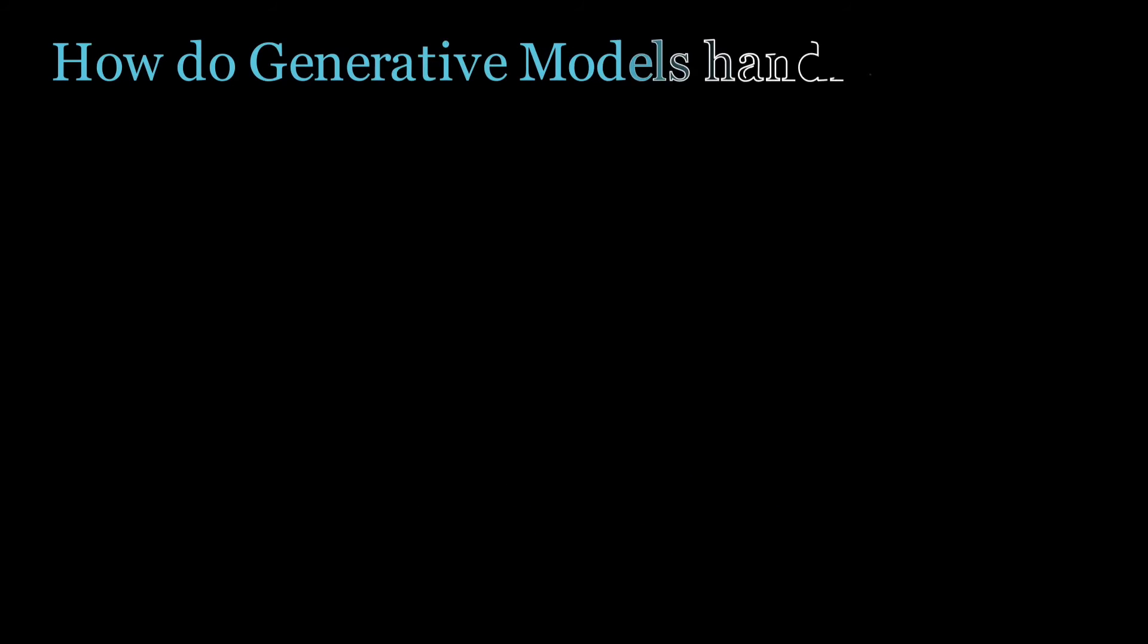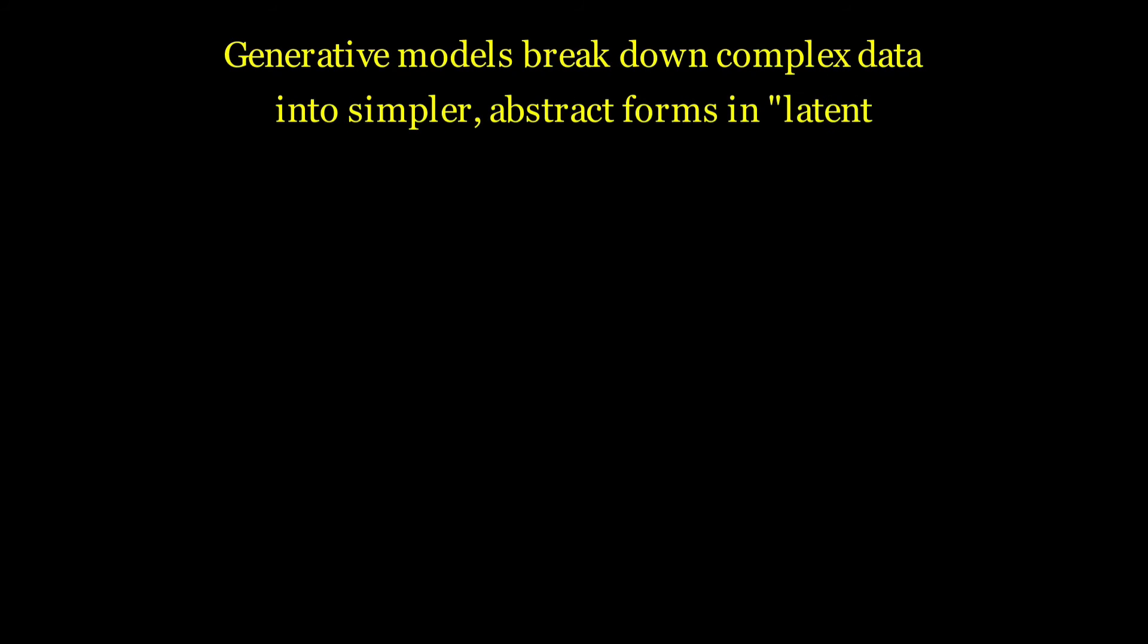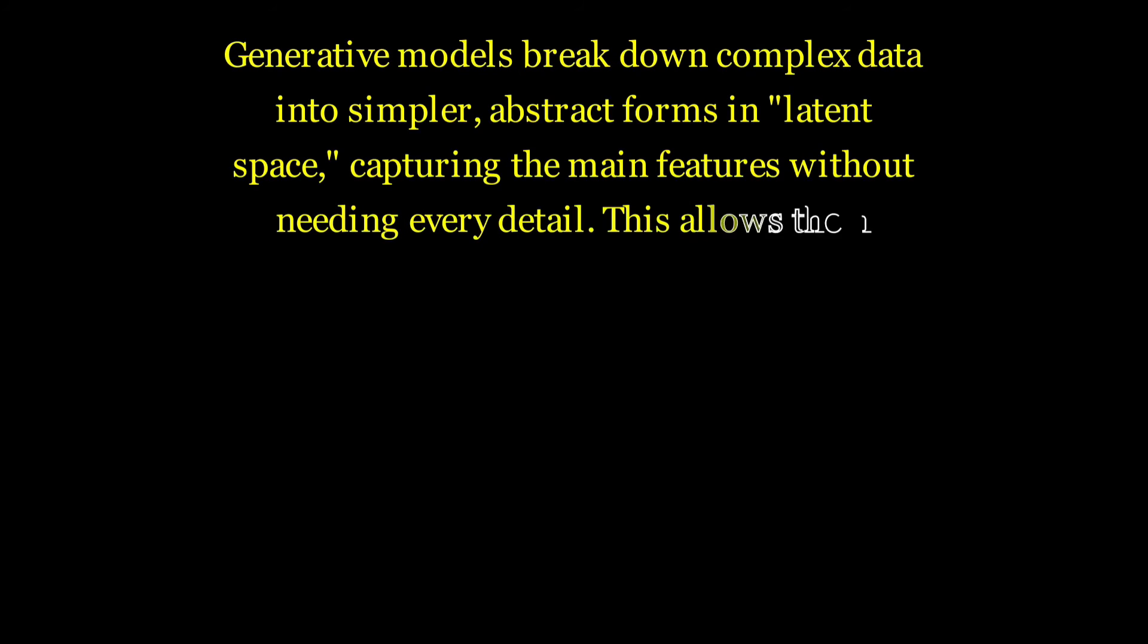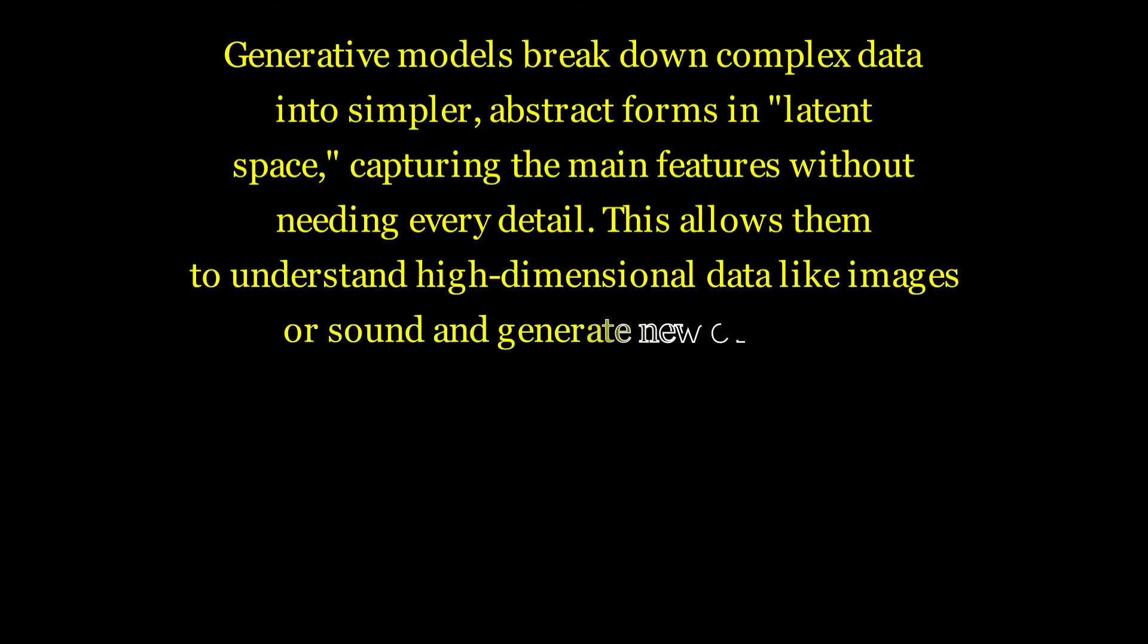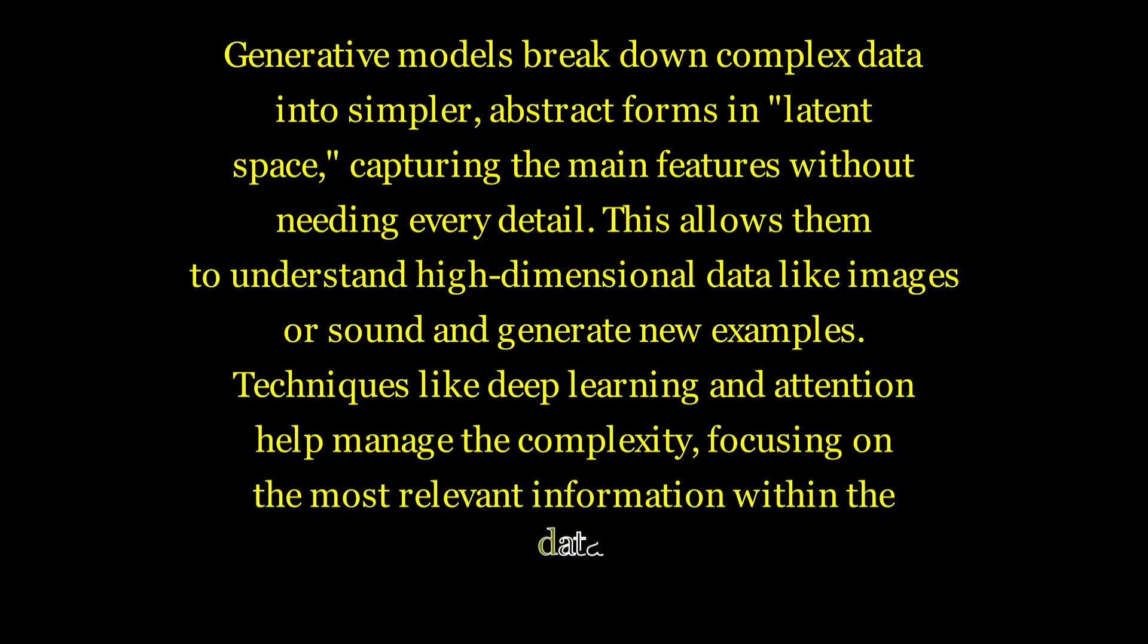How do generative models handle complex, high-dimensional data? Generative models break down complex data into simpler abstract forms in latent space, capturing the main features without needing every detail. This allows them to understand high-dimensional data like images or sound and generate new examples. Techniques like deep learning and attention help manage the complexity, focusing on the most relevant and important information within the data.